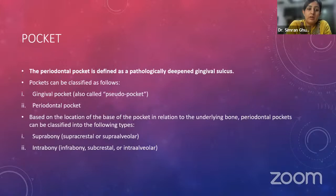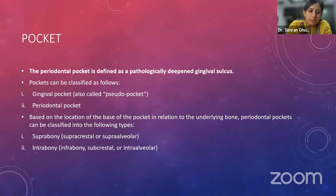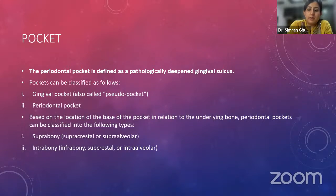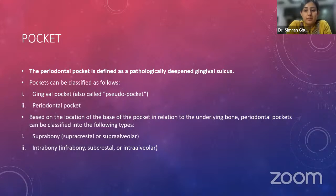Before managing a periodontal pocket, we should know what a pocket is. A periodontal pocket is defined as a pathologically deepened sulcus and is classified into a gingival pocket, also known as a pseudopocket, or a periodontal pocket, also known as a true pocket. A gingival pocket is formed by gingival enlargement without destruction of the underlying periodontal tissues; the sulcus is deepened because of the increased bulk of the gingiva. A periodontal pocket produces destruction of supporting periodontal tissues, leading to loosening and exfoliation of the tooth if not treated in time.